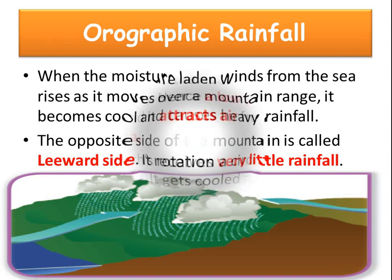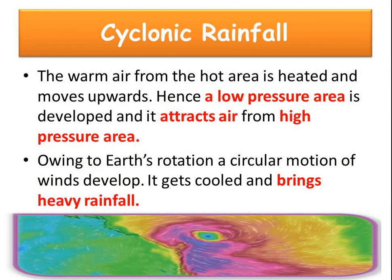Now we will see what is cyclonic rainfall. Cyclones are a storm or system of wind that rotates about a centre of low atmospheric pressure — a wind that moves in a circular manner. The warm air from the hot area is heated and moves upward, so a low pressure area develops and attracts air from high pressure areas. Owing to the earth's rotation in a circular motion, wind develops, gets cooled and brings heavy rainfall.